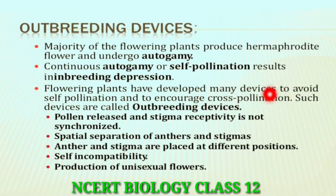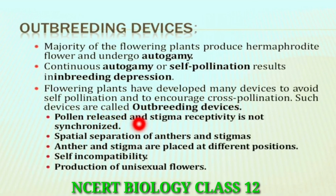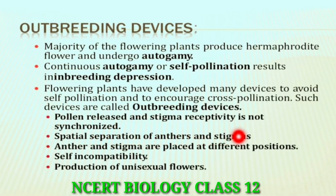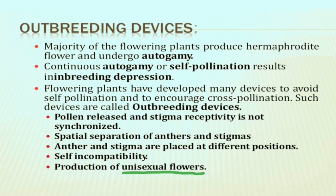Such devices are called outbreeding devices. These include: pollen released at different times; stigma receptivity not synchronized; spatial separation of anther and stigma; anther and stigma placed at different positions; self-incompatibility; and the production of unisexual flowers, so that self-pollination is prevented.